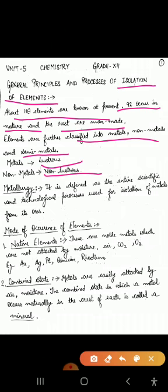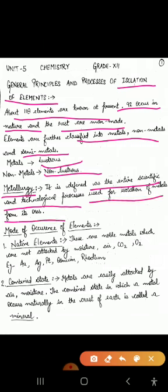In this chapter we study the principles and processes to isolate the elements. What is metallurgy? Metallurgy is defined as the entire — meaning complete — scientific and technological process which is used for the isolation of metals from its ores. Ores are those minerals from which we can profitably and conveniently extract a metal, meaning the process should not be very expensive or very complicated.